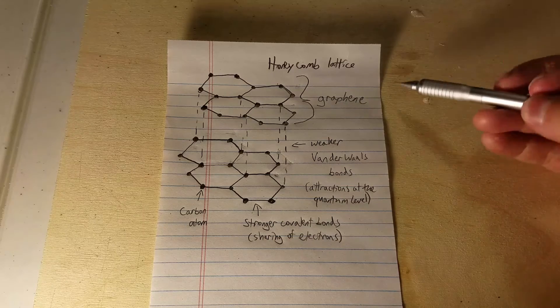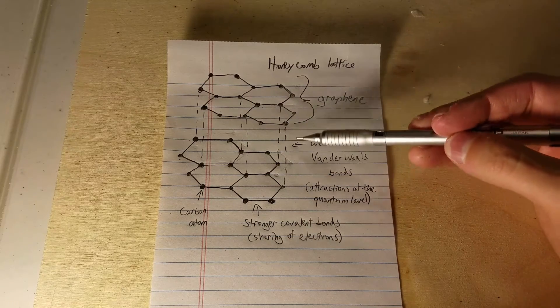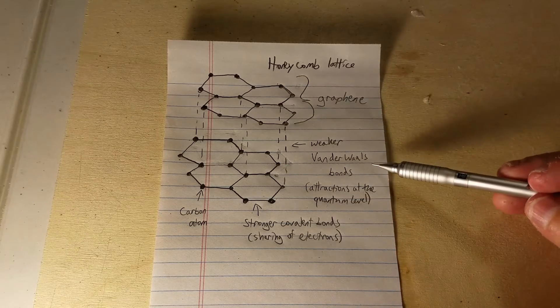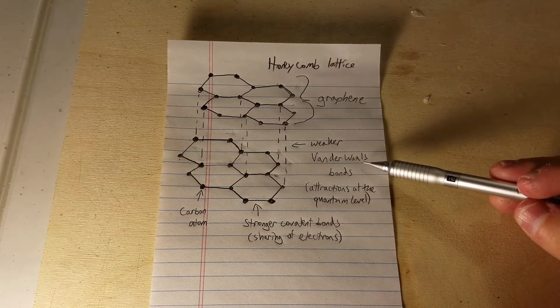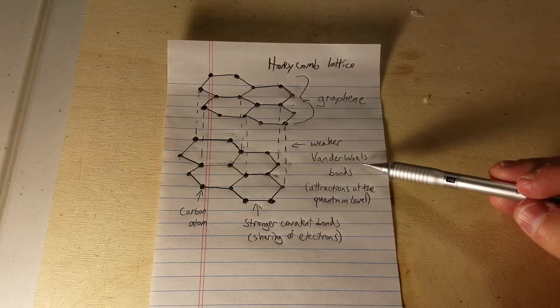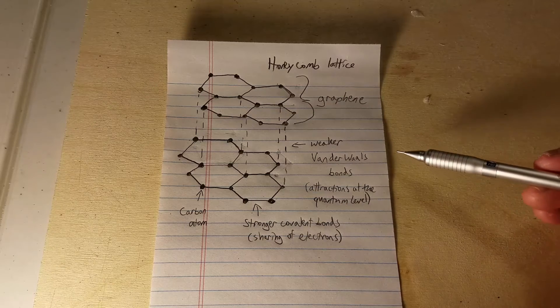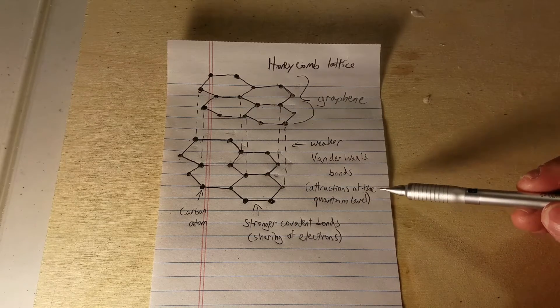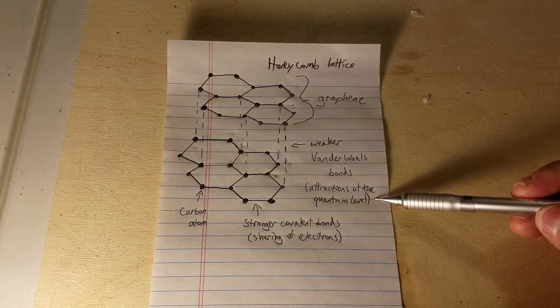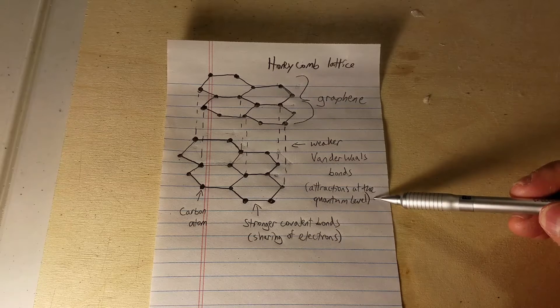A single layer is called graphene. And then those layers are connected to each other by weaker bonds. They're called van der Waals bonds. These bonds are different from the classic bonds that you may have learned about in a chemistry class in school, like covalent bonds or ionic bonds. Unlike those other two types of bonds, van der Waals bonds are much weaker attractions. It's likely due to something that is going on at the quantum level.